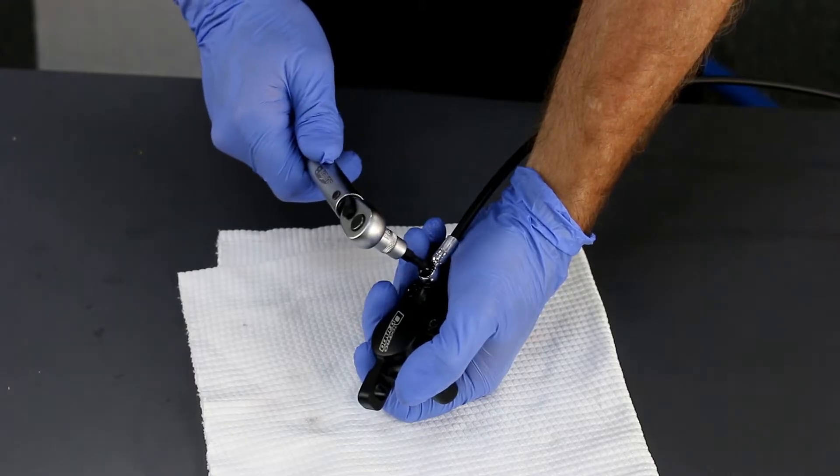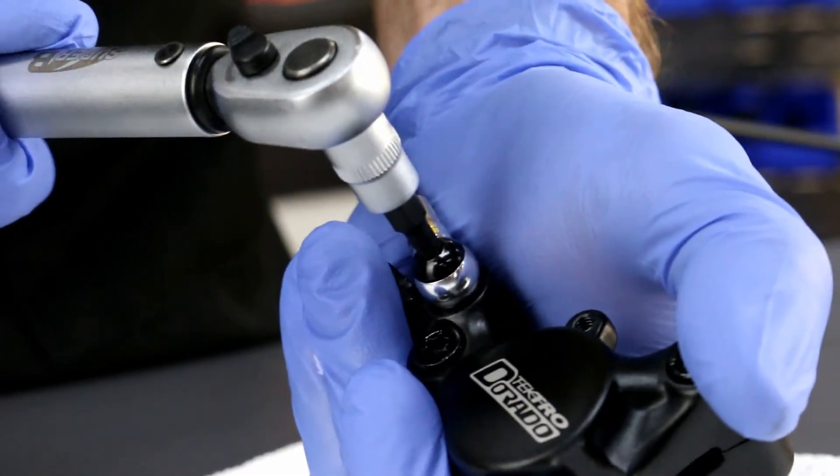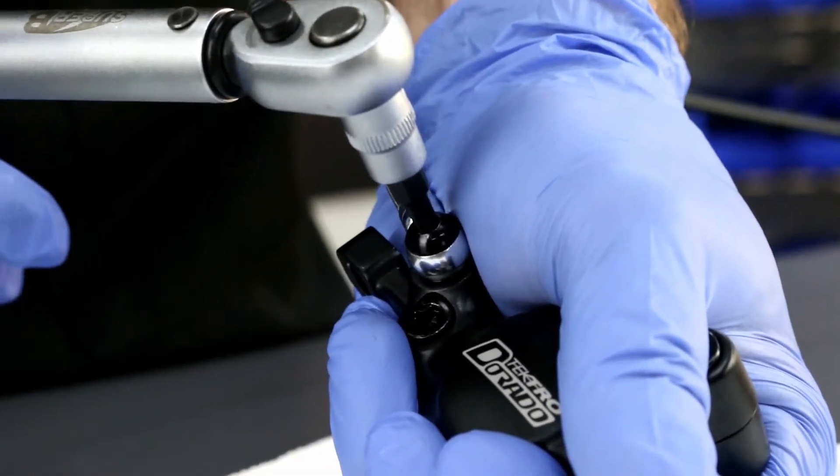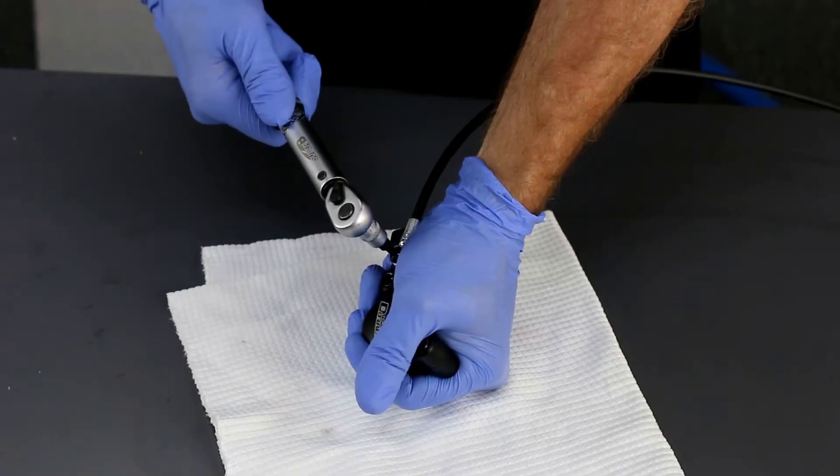First, let's remove the caliper from the fork, loosening both bolts before we remove the whole caliper.